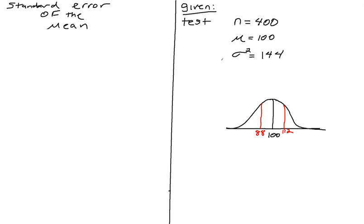You should know by now that with your variance, all you have to do to figure out the standard deviation is take the square root, and that is 12.